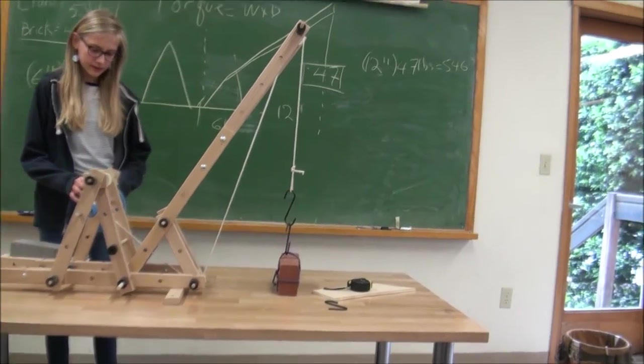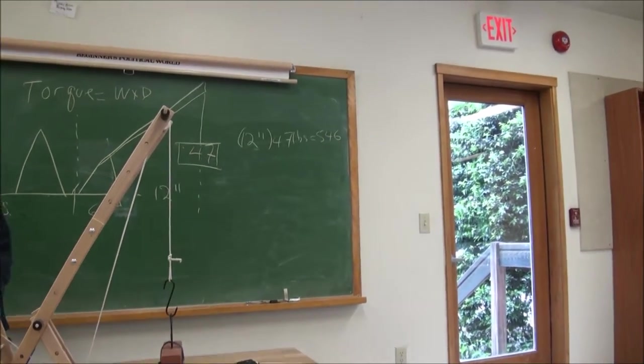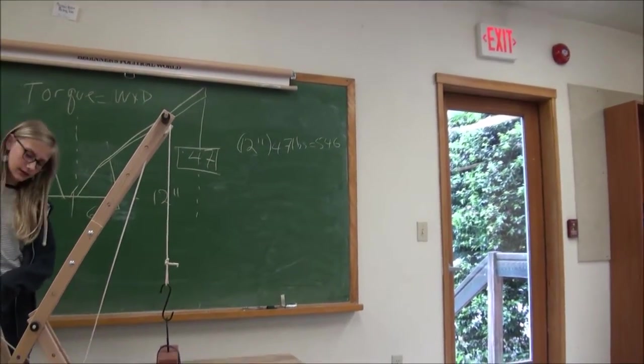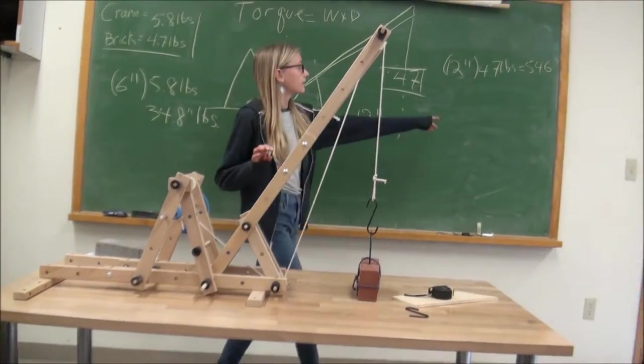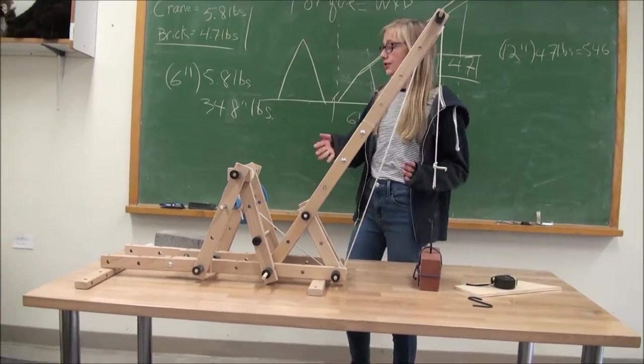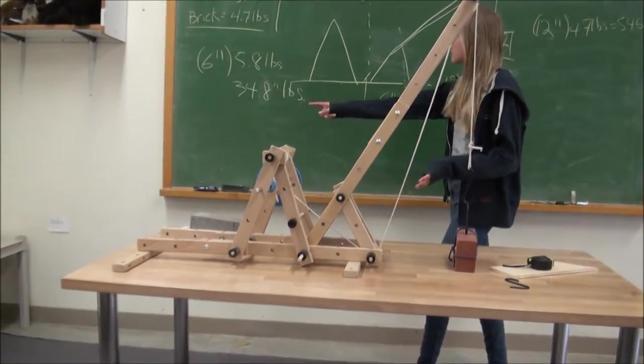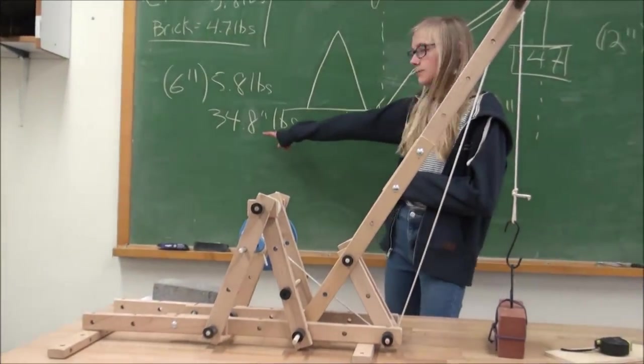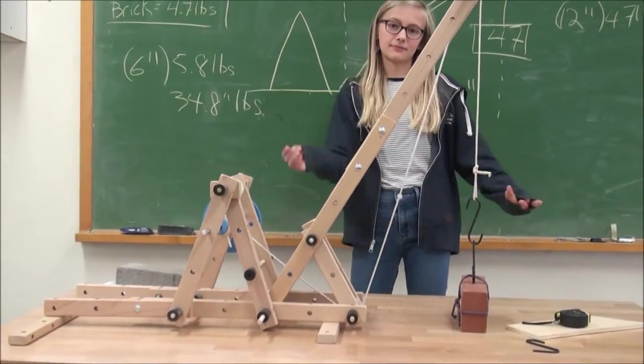It tips over because the weight on this side of the crane, which is the 54.6 inch pounds, is larger than the weight on this side of the crane, which is only 34.8 inch pounds, so it's going to tip.